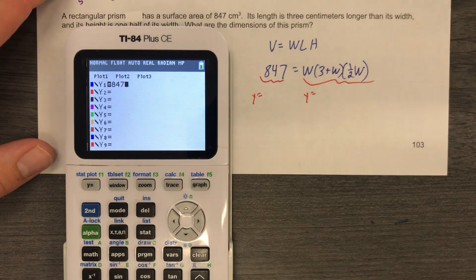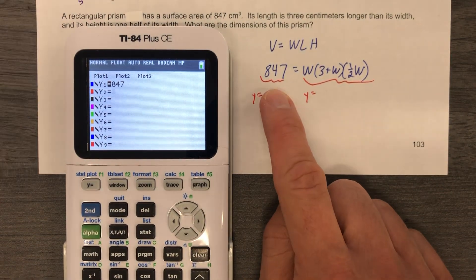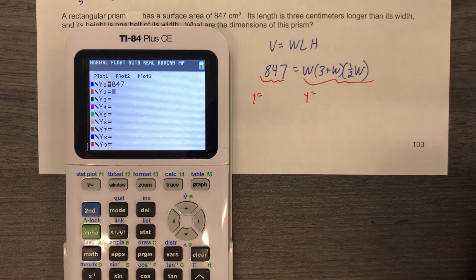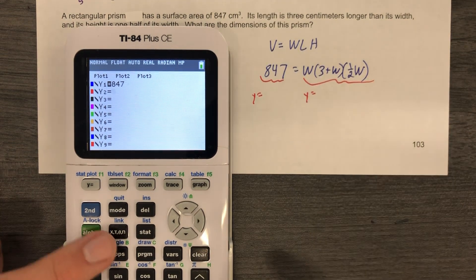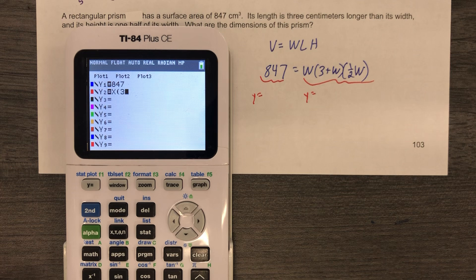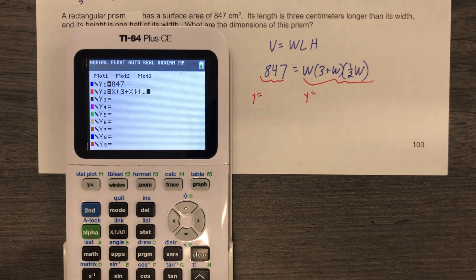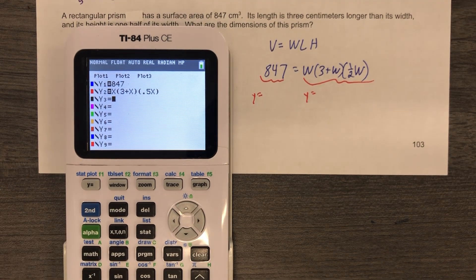All right. So 847, again 847, Y equals 847 is a horizontal line. And as I type this side, I'm not going to use W. I'm going to use X. You'll do the same thing if you're using software. And I'm going to graph.